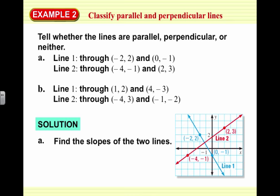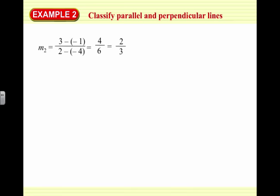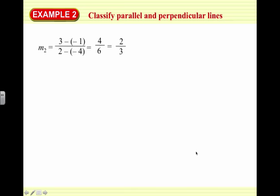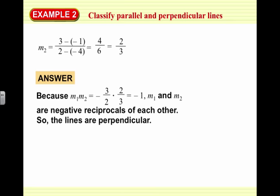We're going to find the slopes of the two lines. For the first line, y2 minus y1 over x2 minus x1 gives us negative 1 minus 2 over 0 minus negative 2, which equals negative 3 halves. For the second line, 3 minus negative 1 over 2 minus negative 4 gives us 4 over 6, which is two-thirds. Negative 3 halves and two-thirds are negative reciprocals, and M1 times M2 equals negative 3 halves times two-thirds equals negative 1, so the lines are perpendicular.